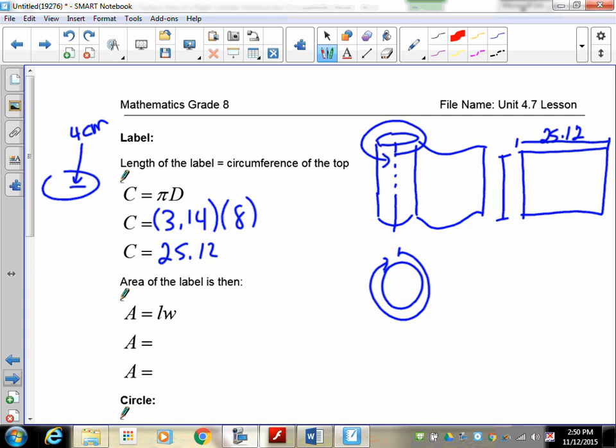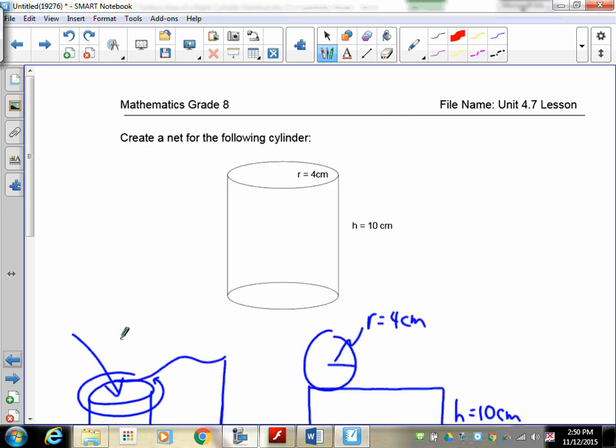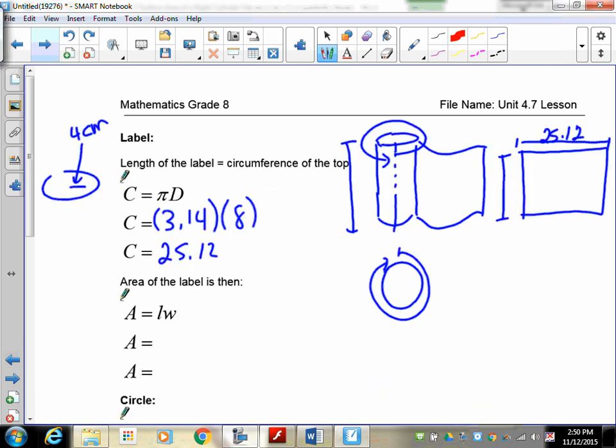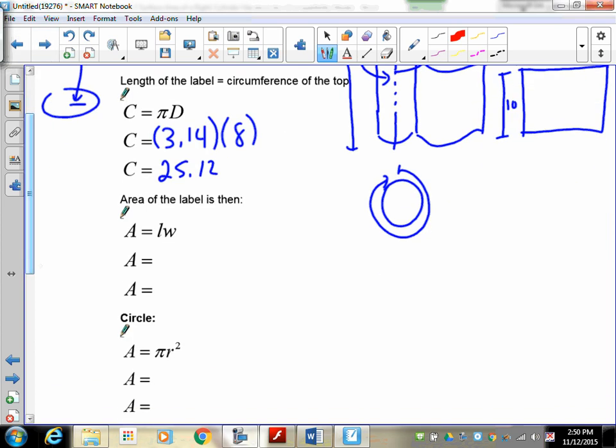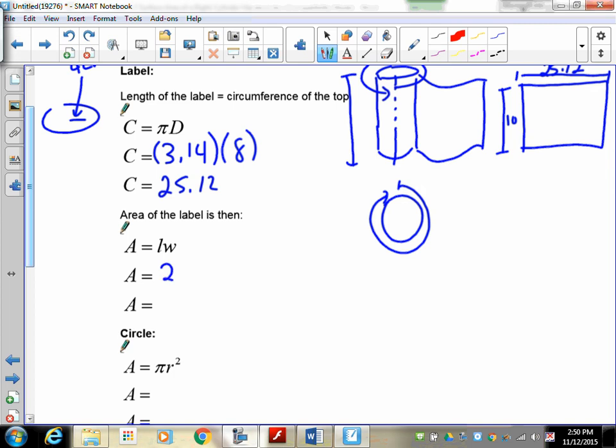Well, we have to find the area of that rectangle, so we need to know what this distance is right here. Well, that's fairly simple, because if you think of our cylinder, that distance is the height of the can. And our can, if you go back to our cylinder, our height was 10 centimeters. So, moving along, that means that this is 10. So, if we find the area of the label, we know the length times width. We've got 25.12. We multiply that by a height of 10.